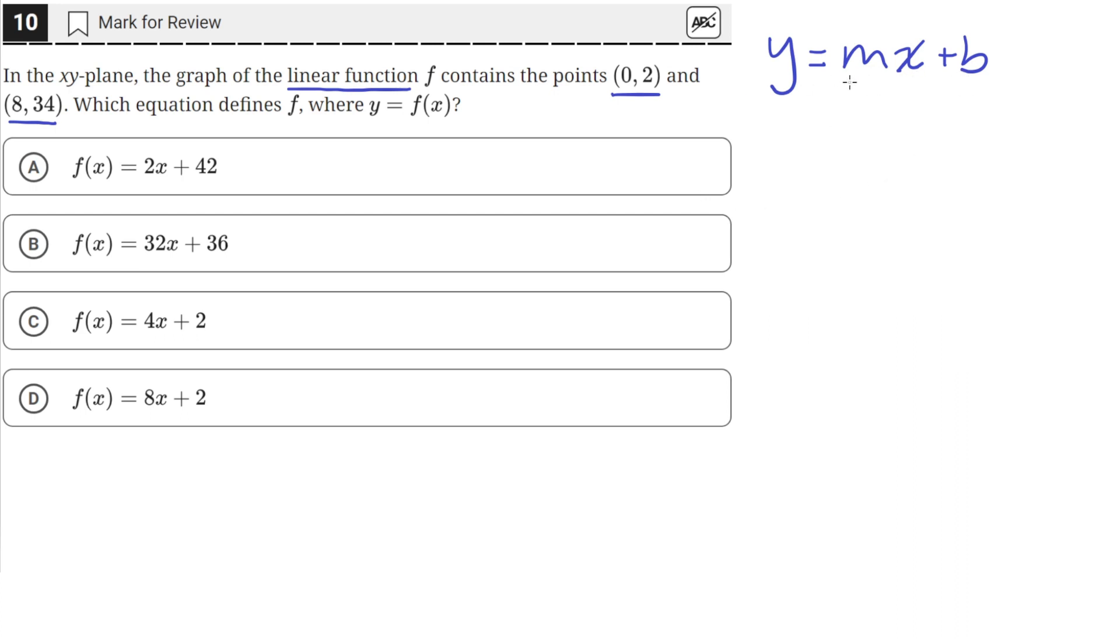To find the slope, we need to find the rise over the run, which is the change in y over change in x. These points give us xy-coordinates for both, and we can find the slope by dividing the change in y over the change in x.